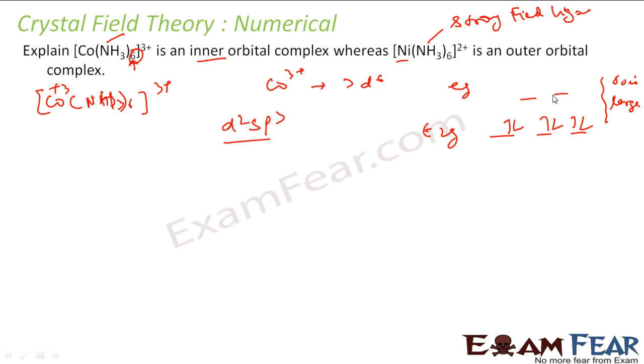So the hybridization will be d2sp3 because there are six orbitals required. Two of these inner d orbitals will be used, the next s will be used, and the next three p will be used. This gives d2sp3 hybridization, which is nothing but inner orbital complex.